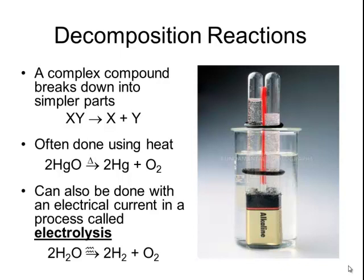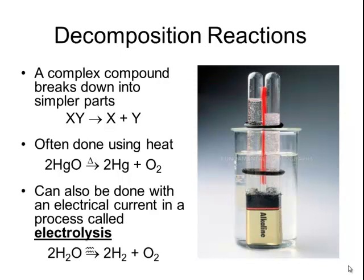In the photograph to the right, I have a normal 9-volt battery immersed in a container of water. On top of that 9-volt battery, I have two test tubes that are upside down, originally filled with water and placed over each of the terminals of the battery. When the power is turned on, the electrical current causes the water to decompose into hydrogen and oxygen. The hydrogen gas is collected in the tube on the right-hand side, and the oxygen gas is collected in the tube on the left-hand side. Notice that there seems to be about twice as much hydrogen gas as oxygen gas, which matches the balanced chemical equation.